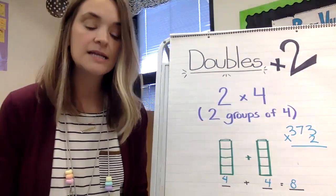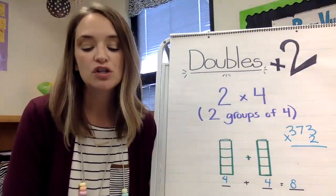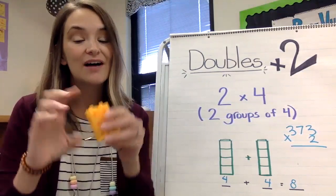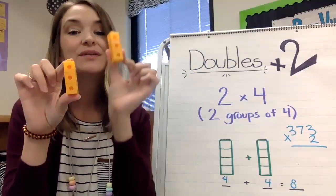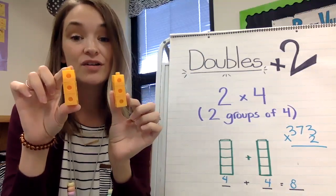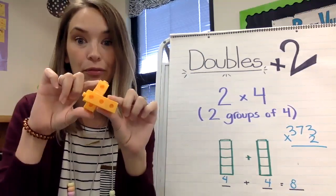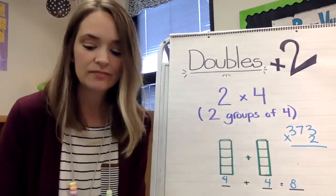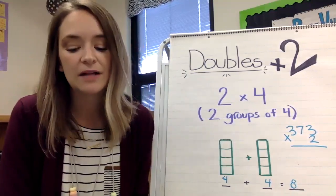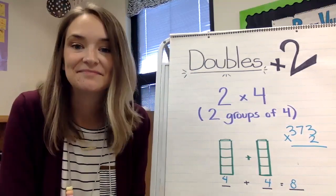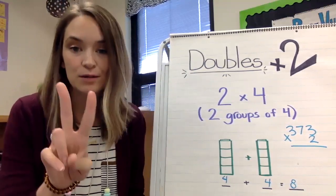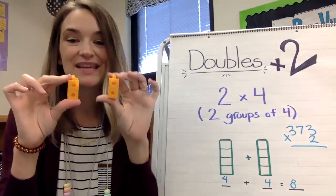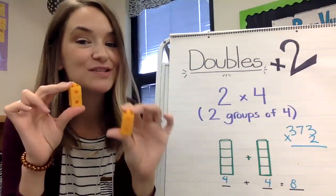So let's do some other examples. What if my problem is two times three? If I have two times three, that means I have two groups of three. So three plus three is six, which means two times three equals six. Same with three times two — you're just flipping the fact family. Let's do one more example. What if my problem is two times two? Two times two simply means two groups of two. Two plus two equals four, so two times two equals four.